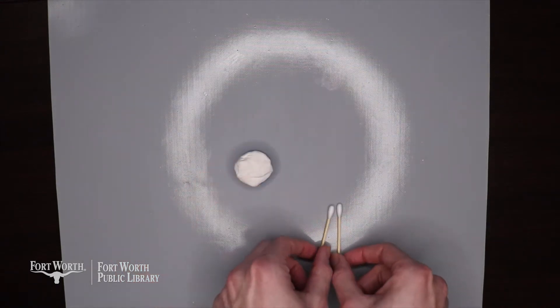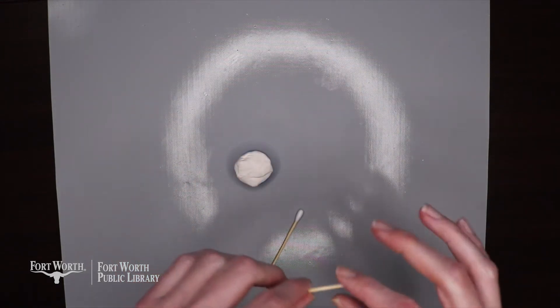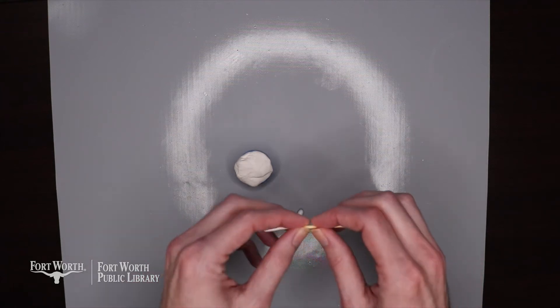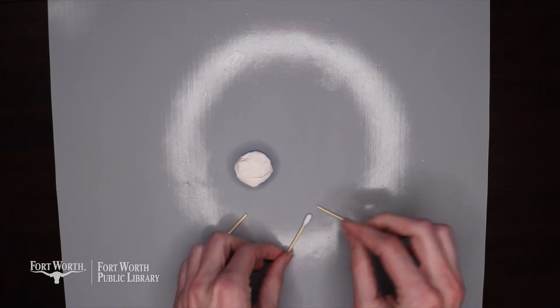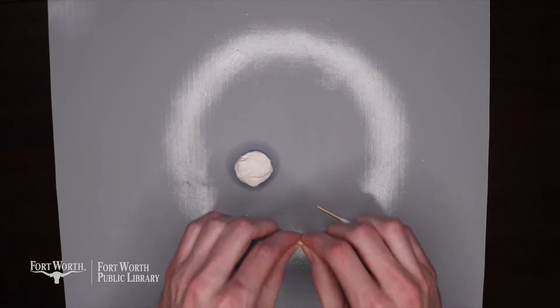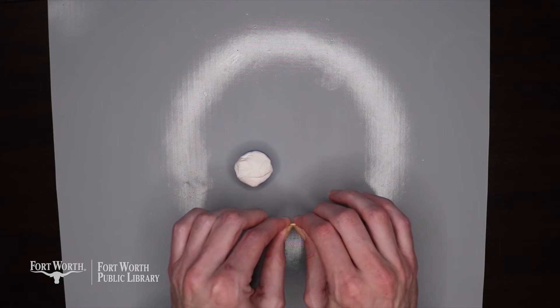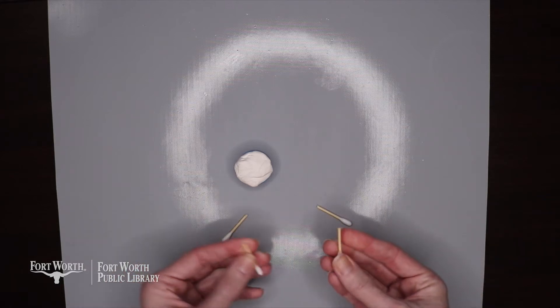Next, we're going to take our cotton swabs and break them in half. Find roughly the halfway point and break them just like that. You're going to do that to both of them.